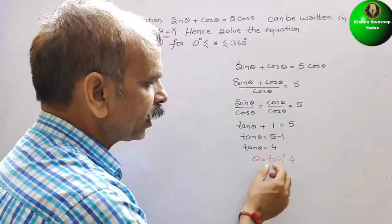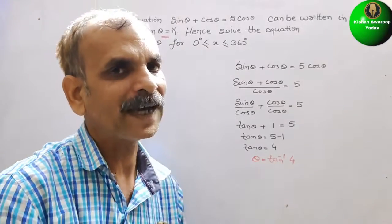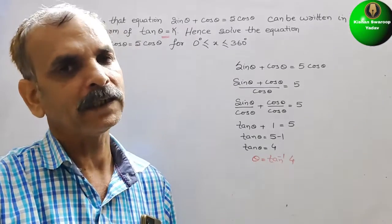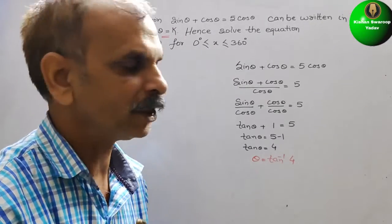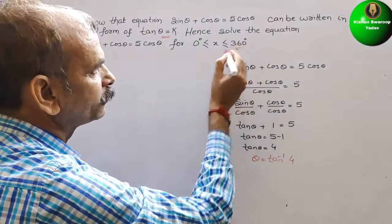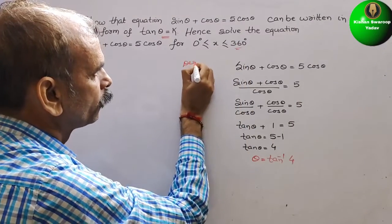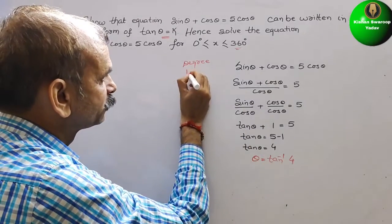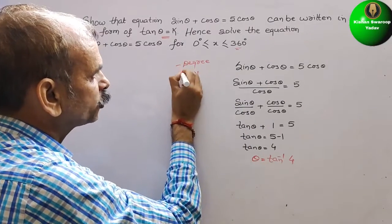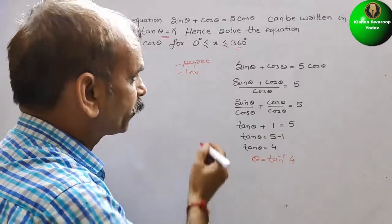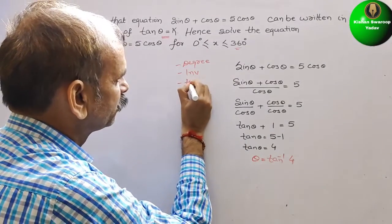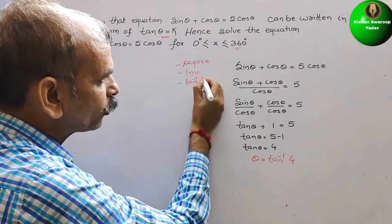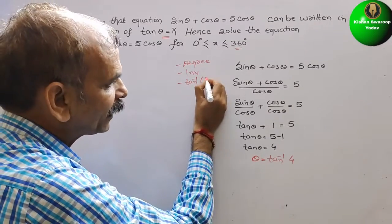So, this value we will take it out with the help of a calculator. So, in calculator we have to set two readings. First is your degree, second is your inverse. So, these two readings after that we have to press tan inverse. Then a bracket will get open. We will write here 4.